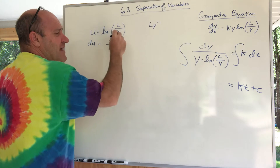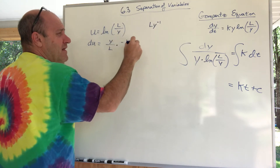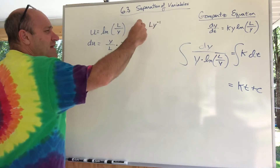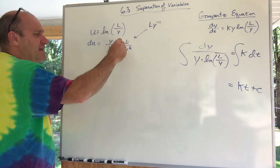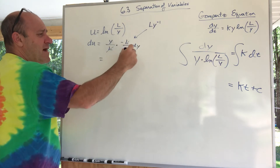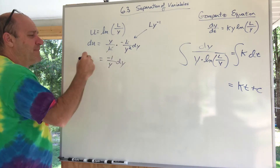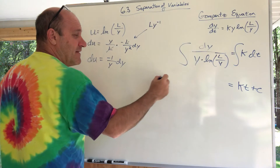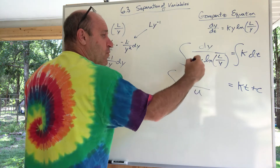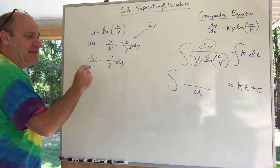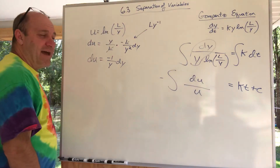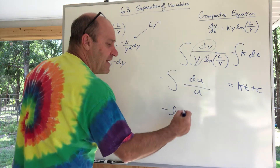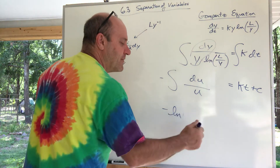Working through that derivative: the L's cancel, one of the y's cancels, and I get negative 1/y dy. So du equals negative 1/y dy, meaning 1/y dy equals negative du. Rewriting the integral: u is ln(L/y), and 1/y dy is negative du. So the integral becomes the integral of 1/u times negative du — negative 1 over u du. Integrating: negative ln|u|. That is awesome — that's what's sitting in the integral.